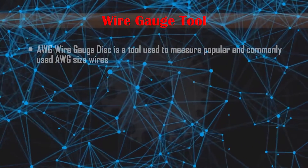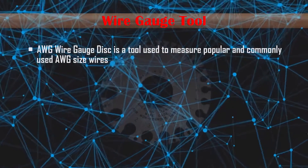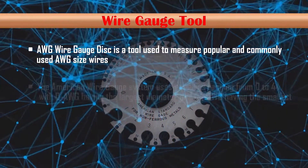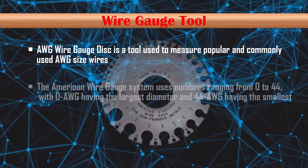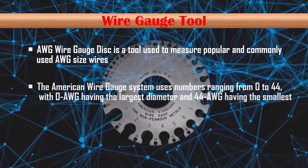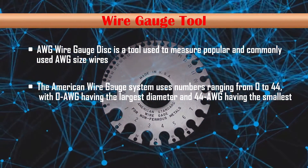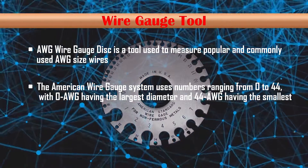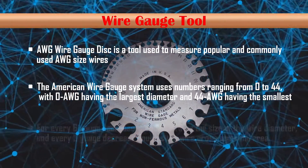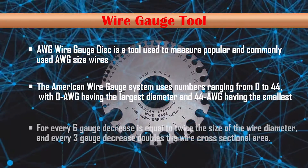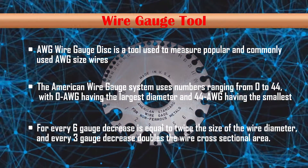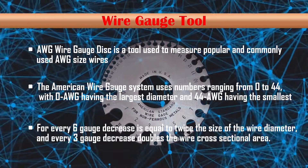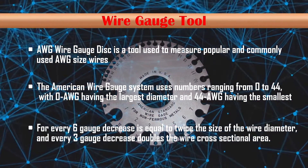An AWG wire gauge disc is a tool used to measure popular and commonly used AWG size wires. The American Wire Gauge system uses numbers ranging from 0 to 44, with 0 AWG having the largest diameter and 44 AWG having the smallest. For every six gauge decrease, the wire diameter doubles, and every three gauge decrease doubles the wire cross-sectional area.